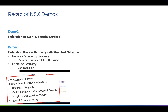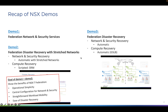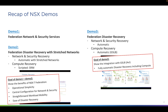Now we'll talk about demo number three. It's also a disaster recovery demo, but this time with compute recovery completely automatic. For that, we have compute on each location and we use single-location networks, centrally configured with Federation. The network and security recovery, as well as the compute recovery, is completely automated. The goal of this demo is to show the new supported integration with GSLB using AVI Networks for full automatic disaster recovery, including compute.